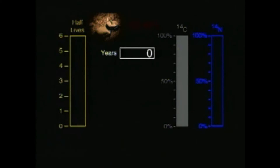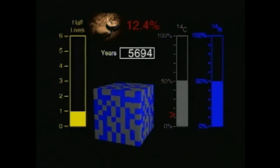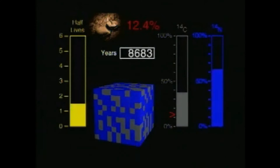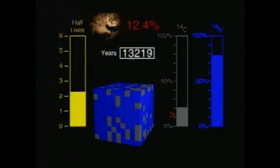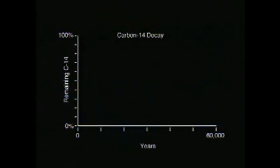Your bone amulet is found to contain only 12.4 percent of carbon-14. The level of 12.4 percent indicates that three half-lives have passed. Three half-lives times 5,730 years equals 17,190 years old. Carbon-14 samples can be accurately dated up to 60,000 years old.